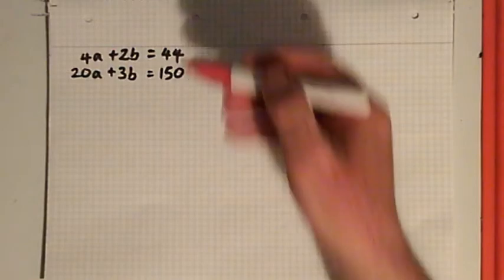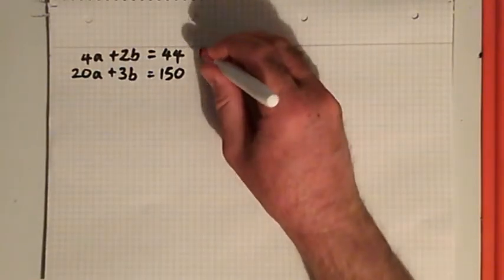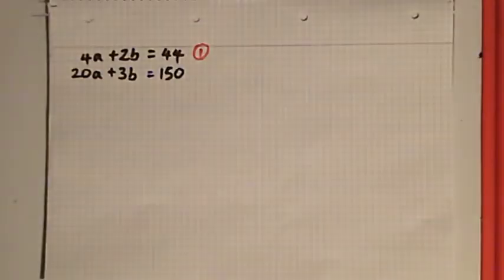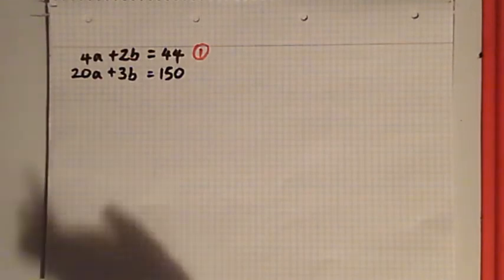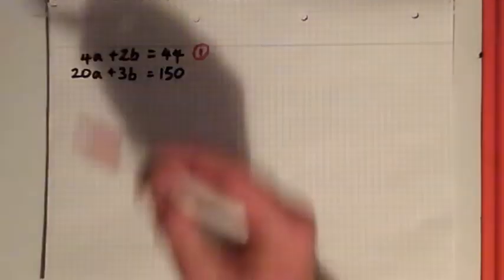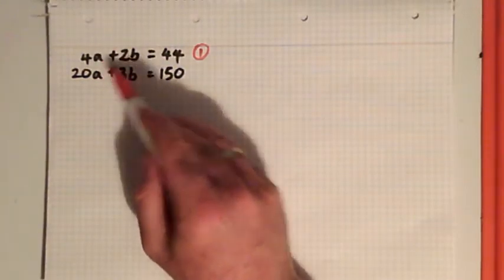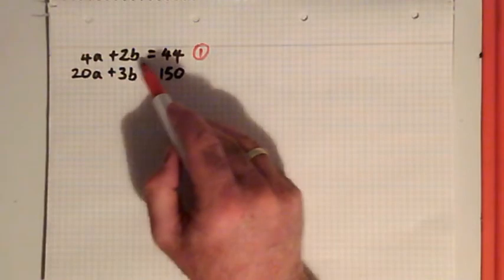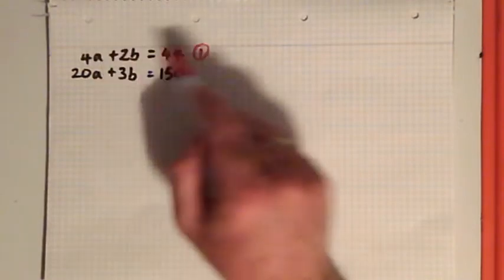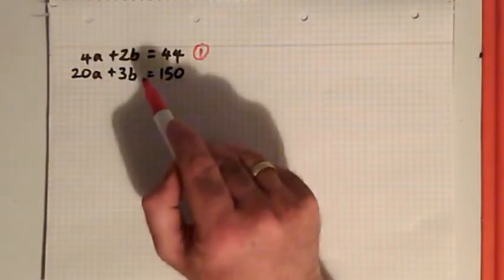So 4a + 2b = 44 was the first one, I would call that equation 1. There are an infinite number of solutions that we could have. All you've got to do is think about the value of b that will make it balance.